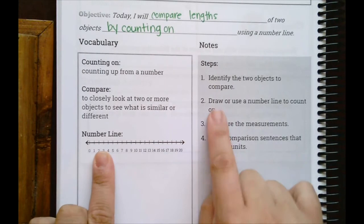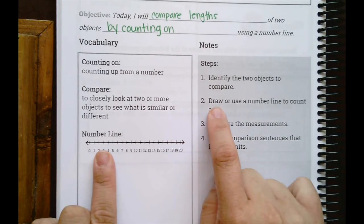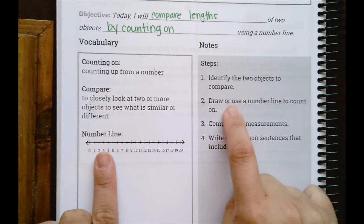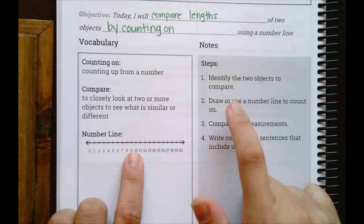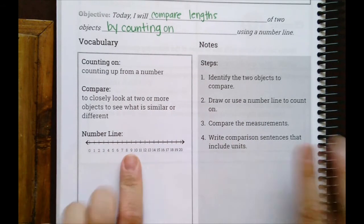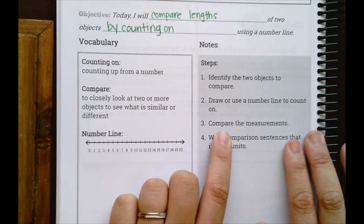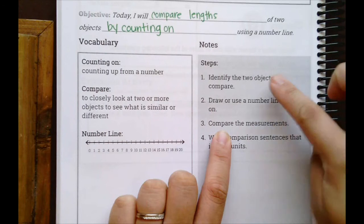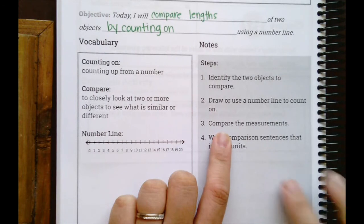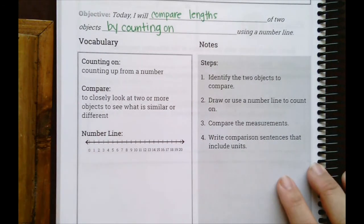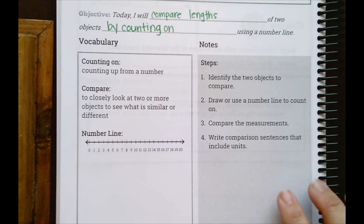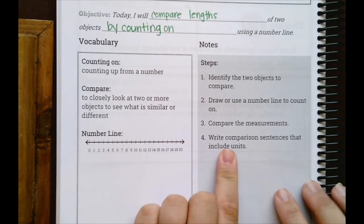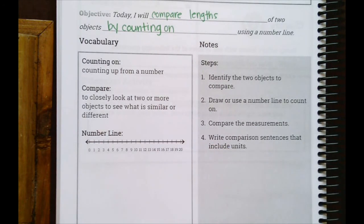But sometimes you'll have to draw it on your own. So if it doesn't have it there, then you need to draw one. Number three says to compare the measurements. Whatever the measurements of the two objects are, you're going to compare them — either say one is shorter than the other or one is longer. And number four says to write comparison sentences that include units. Early on you're probably going to be given the sentences, and eventually you're going to need to write them on your own.